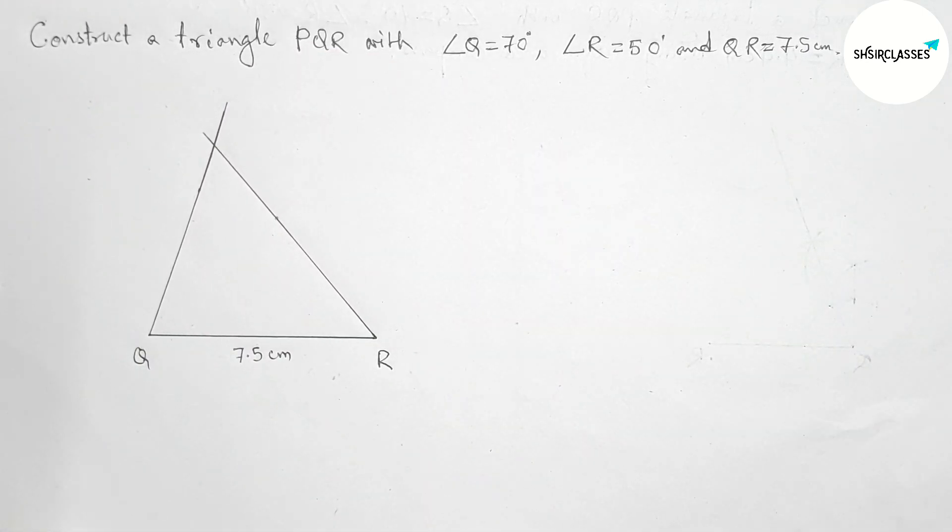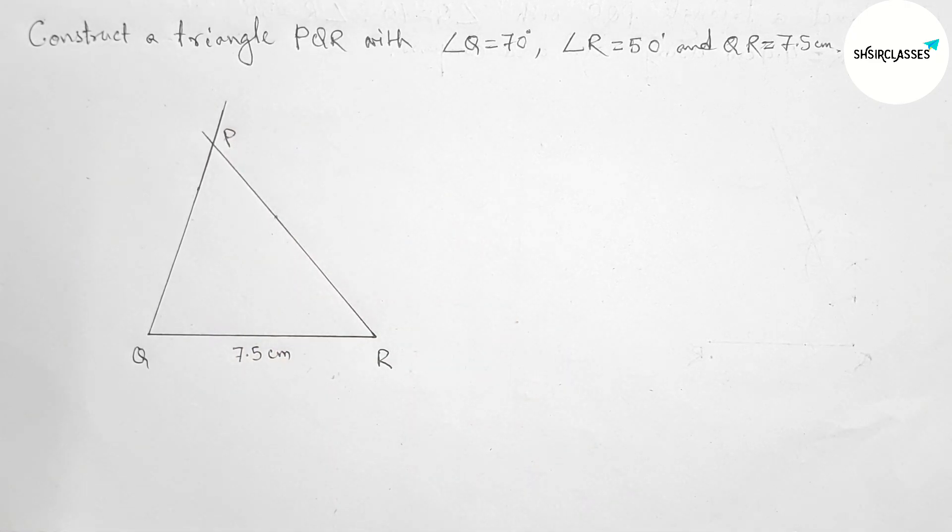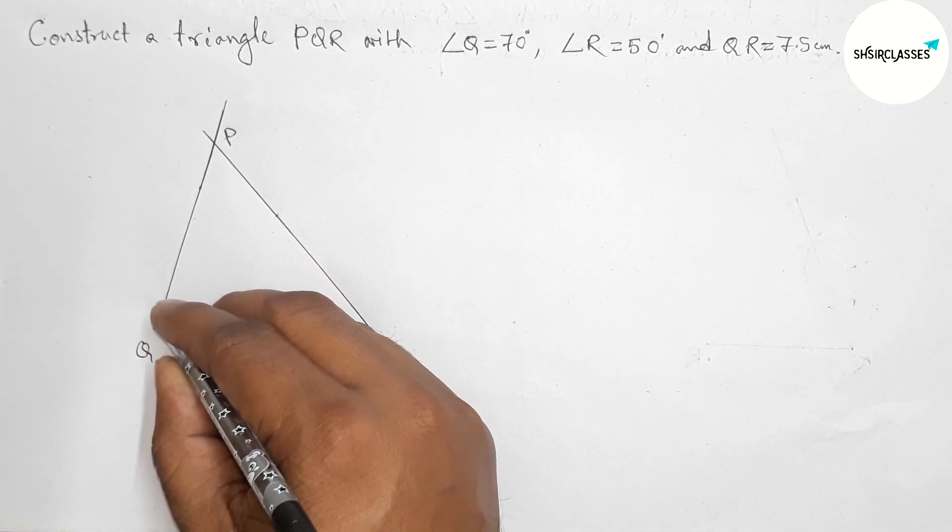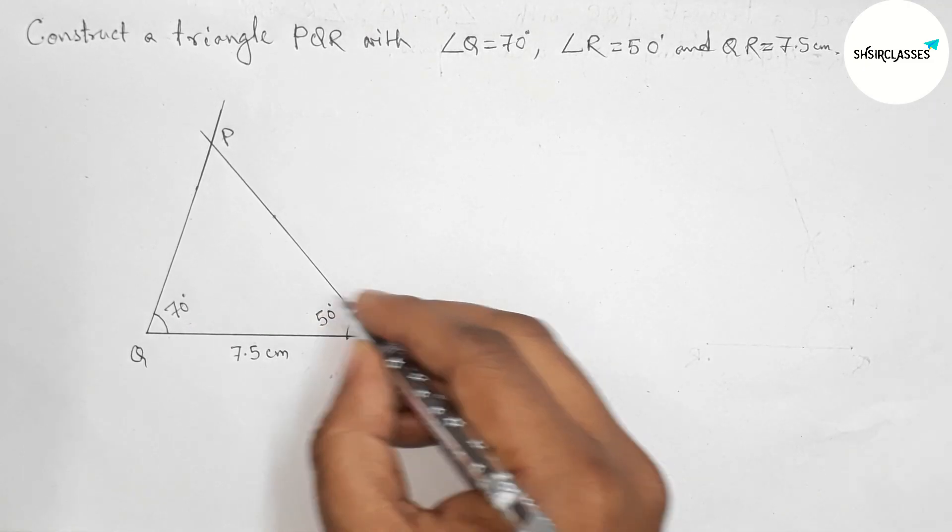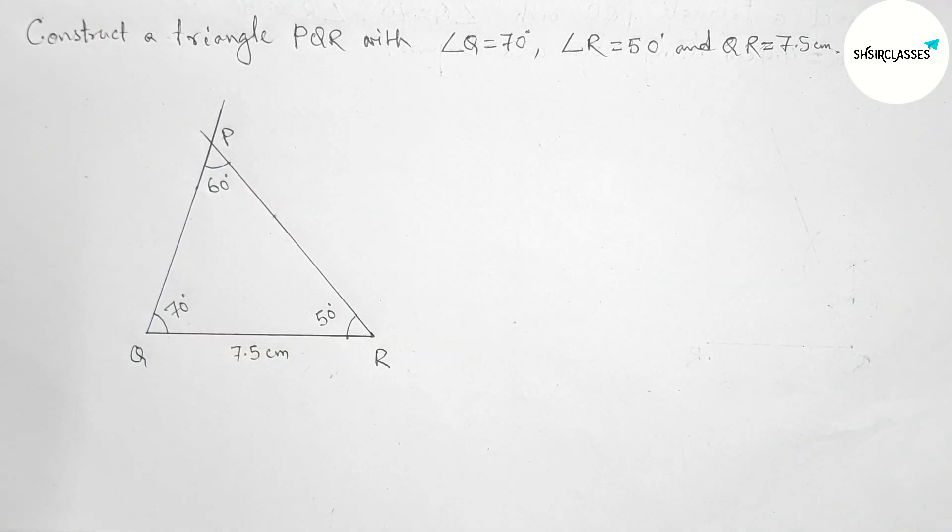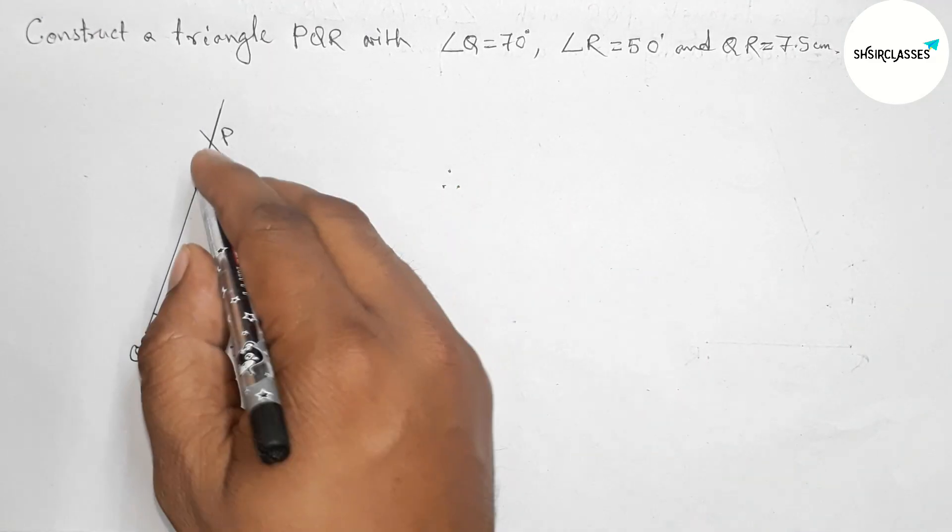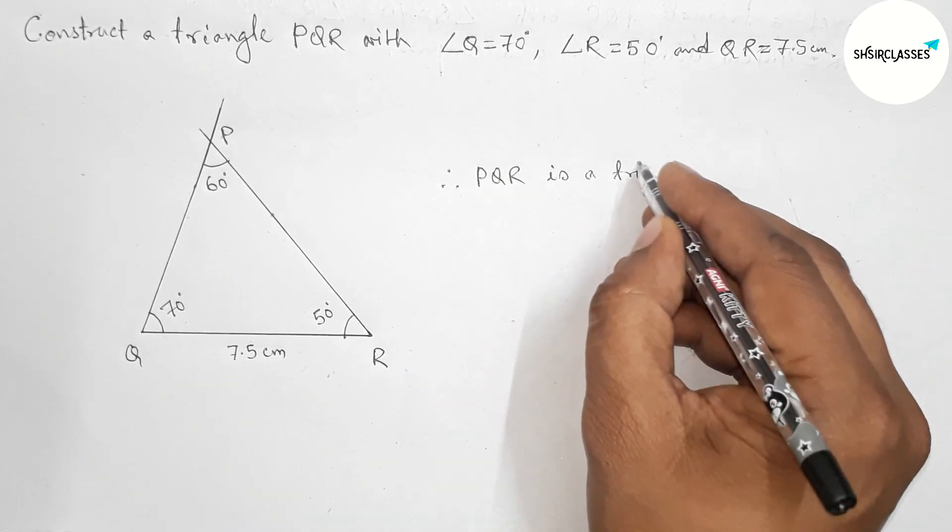Both lines meet at a point - let's call this point P. This angle is 70 degrees and this angle is 50 degrees, so angle P is obviously 60 degrees. Therefore, triangle PQR